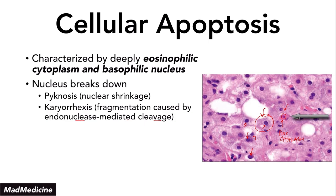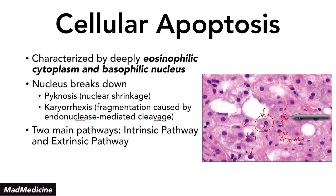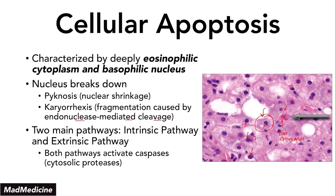There are two main pathways you need to know: the intrinsic pathway, where the cell itself undergoes apoptosis, and the extrinsic pathway, where something outside the cell induces apoptosis. These are both very high-yield topics that will be covered in upcoming lectures. Importantly, both pathways activate caspases, and they both lead to cellular breakdown and cell death.